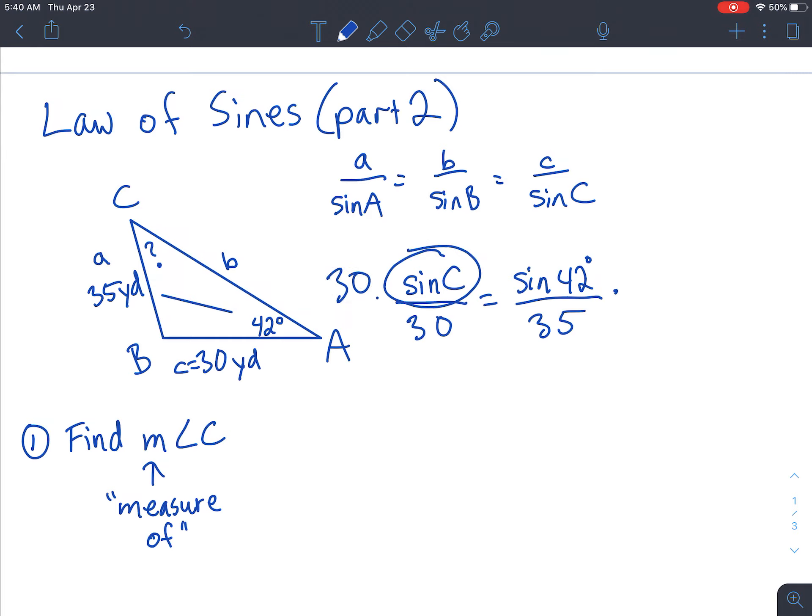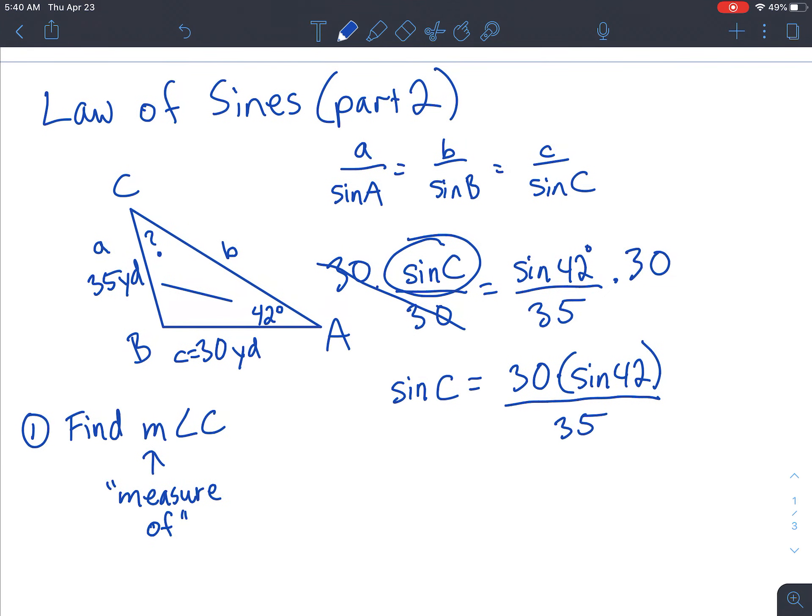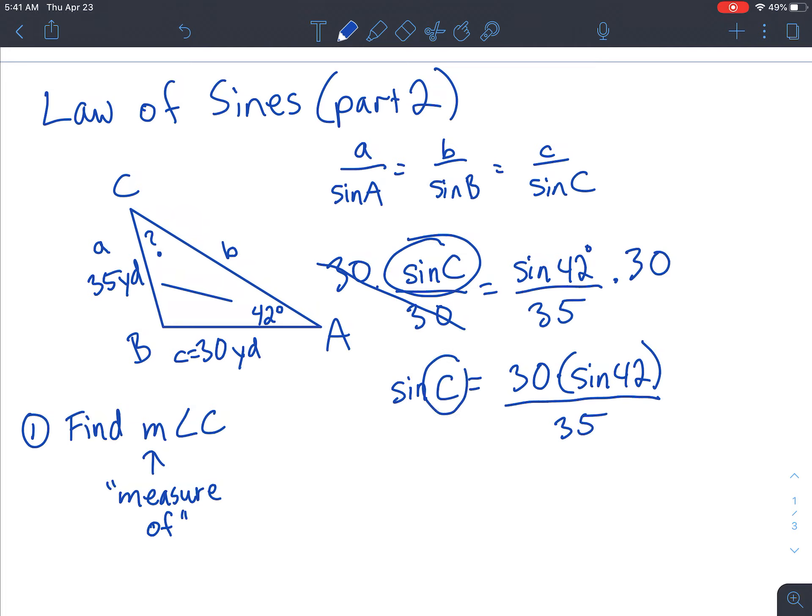Let's solve this theoretically for C, by multiplying both sides by 30. The more that you can do theoretically before you punch in your calculator, the more accurate your answer will be. Sin of C equals 30 times sin of 42 degrees. I'm going to put this in parentheses to remind us that you've got to punch it into your calculator, divided by 35.